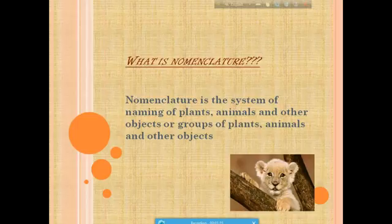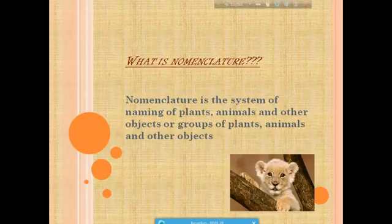On the other hand, a specific name is universally used for a particular species or particular group of animals. For example, Gauraya or House Sparrow is termed Passer domesticus by zoologists throughout the world.